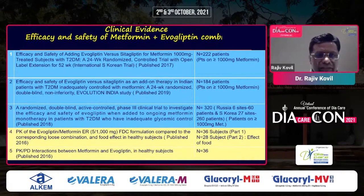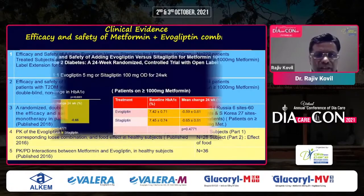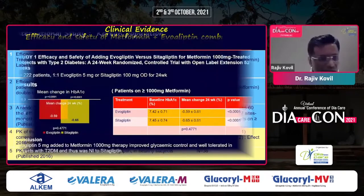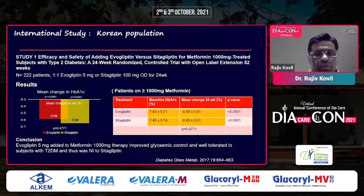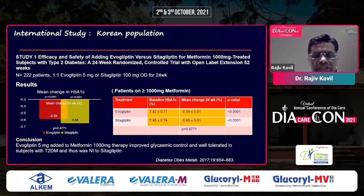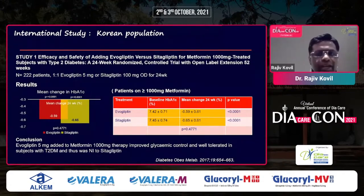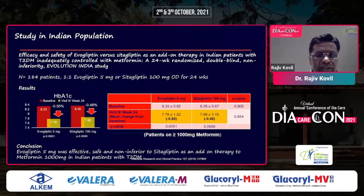This international study looked at the efficacy of adding evogliptin versus sitagliptin on the background of metformin. It's a 24-week randomized controlled trial with an open-label extension. The mean change in HbA1c was similar between evogliptin and sitagliptin when added to background metformin therapy.